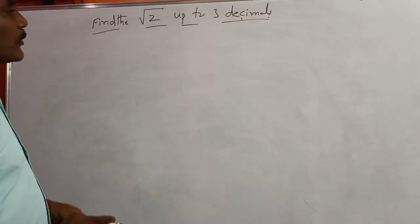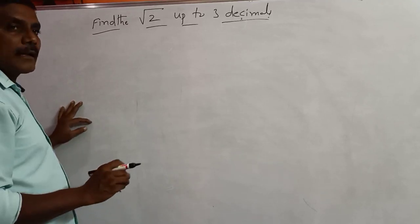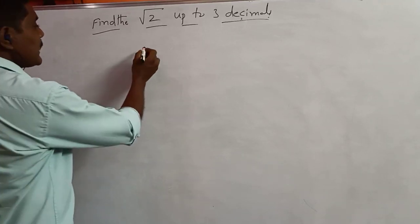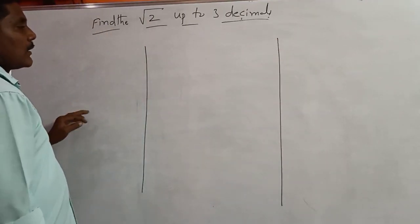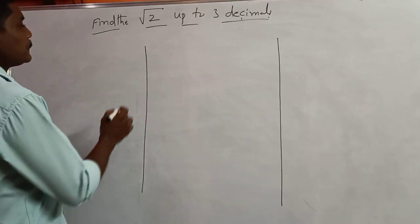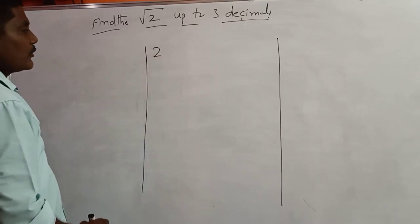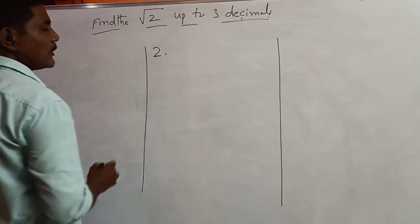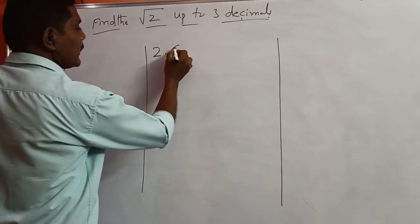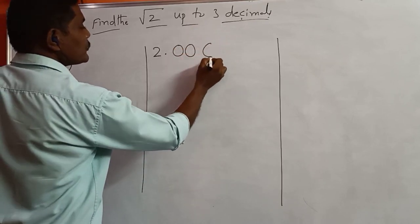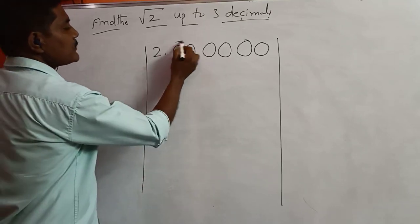I will tell you the process of how to find this square root, which is an irrational number. We cannot find the exact value. Draw two vertical lines. We have to find the number 2, so put 2 here. Then put a decimal. Since we have to find up to 3 decimals, we take here 3 pairs of zeros: 1, 2, 3.